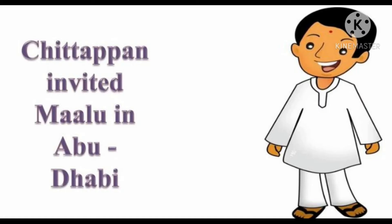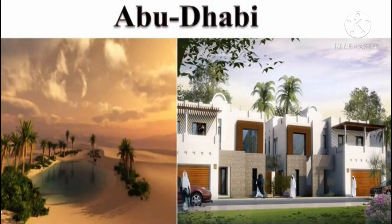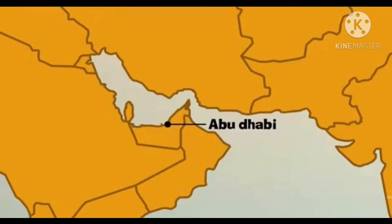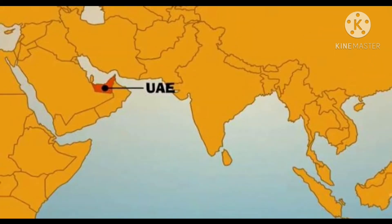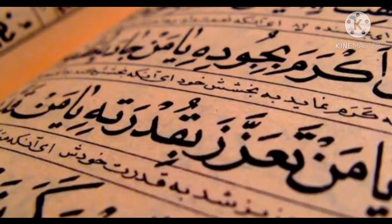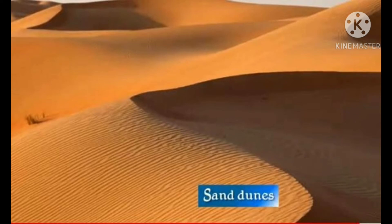Chithappan invited Malu to Abu Dhabi. Let's discuss about Abu Dhabi. See, it's a desert island — see the location of Abu Dhabi on the map. Abu Dhabi is located in UAE. The language used in Abu Dhabi is Arabic. These are the sand dunes found in Abu Dhabi — mountains of sand are known as sand dunes.